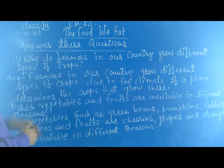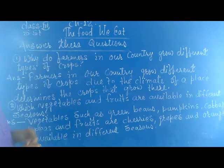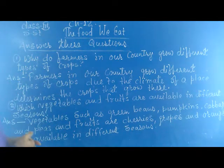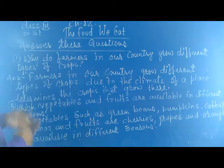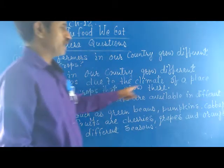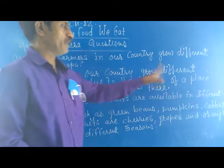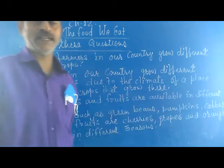Question number 1 is: why do farmers in our country grow different types of crops? The answer is, farmers in our country grow different types of crops due to the climate of a place, which determines the crops that grow there.